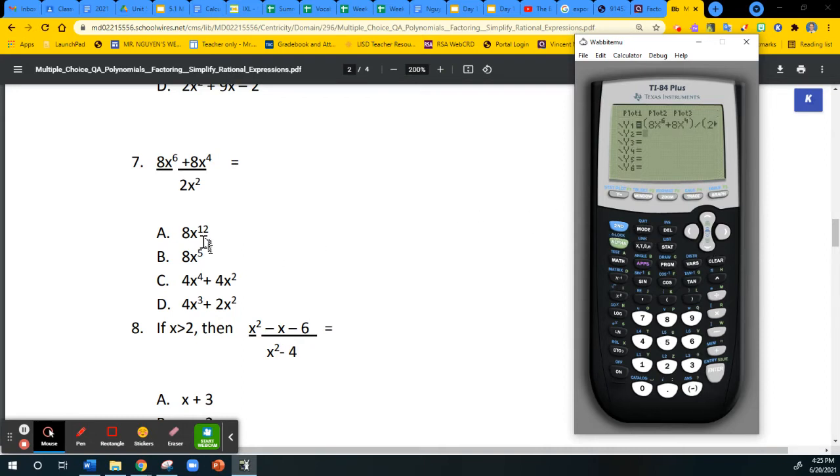Now, if any of these answer choices matches exactly as the given problem, that means this is the answer. I'm going to check A first. In Y2, I'm going to do 8x raised to the 12th power. If these happen to be the same, they would have the same table of values. I'm going to go to second graph to get my table and verify my Y1 and Y2. Look at this, these values are all different. That means A is not the answer.